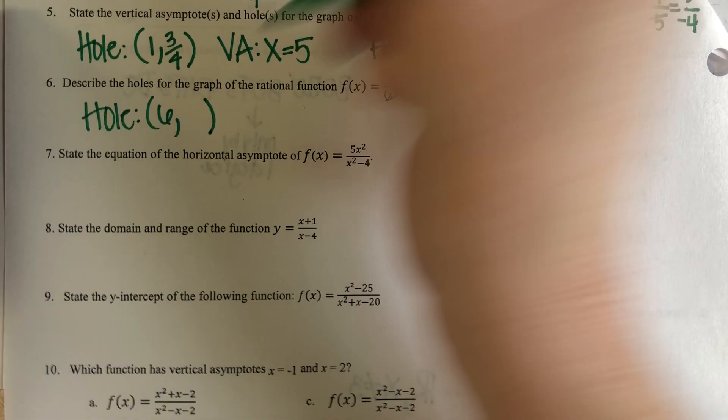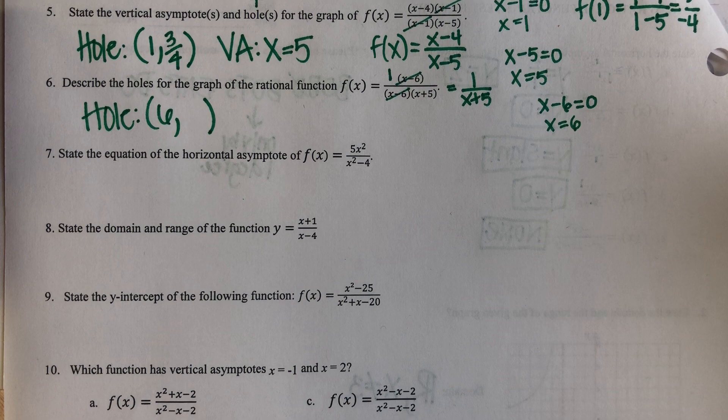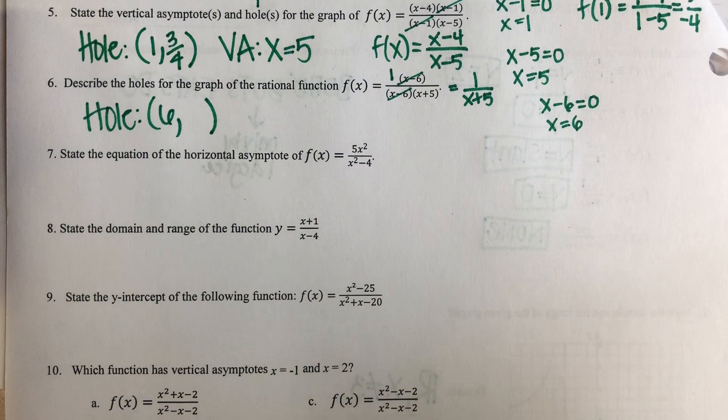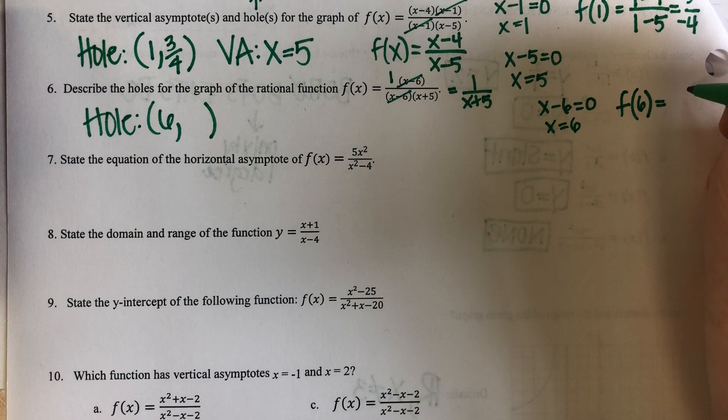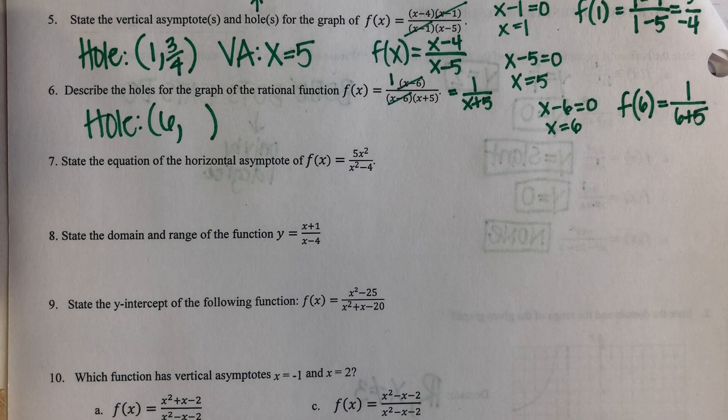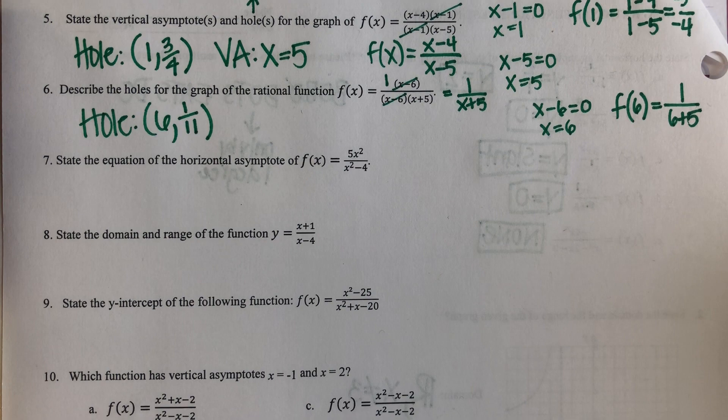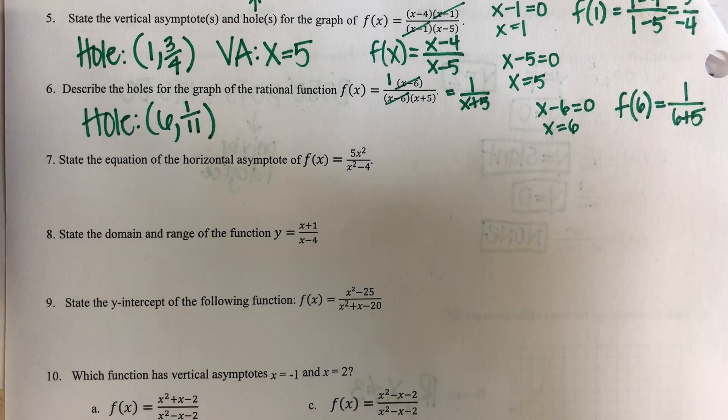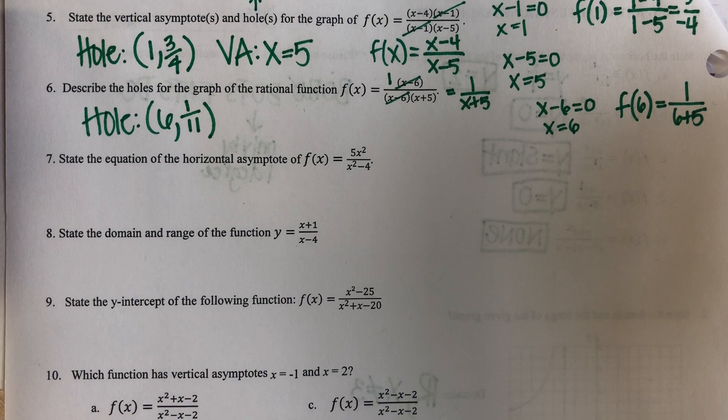I need to know what my Y value is, so I'm going to plug it back into my leftover function. F of six equals one over six plus five. Well, six plus five is 11, so my fraction is one over 11. I'm not asking you to graph anything — I just simply wanted you to find the hole of the function. It's okay to have fractions, so please don't think that you were wrong.